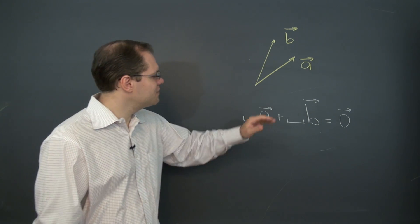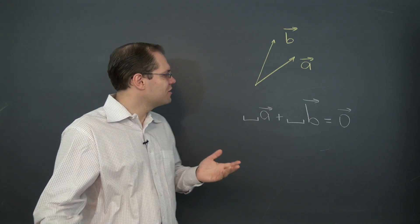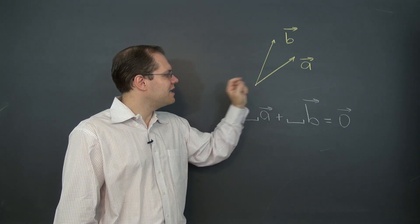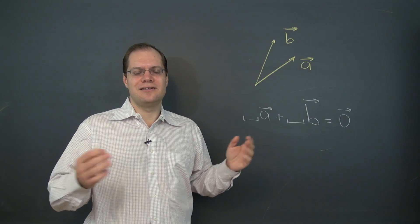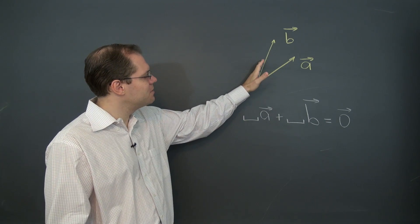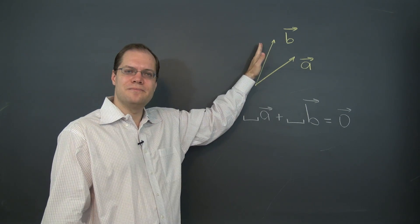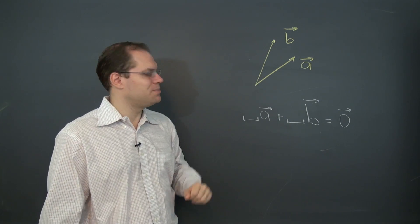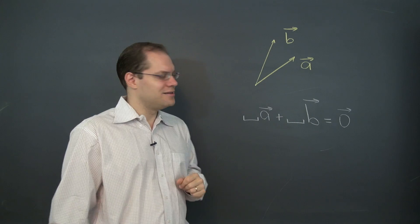Let's apply the two definitions to this pair of vectors. Are they linearly dependent? They aren't. According to the first definition, is A a linear combination of B? When we're down to one vector, linear combination simply means a multiple. So is A a multiple of B? It's not, because all multiples of B lie along this line. So A is not a multiple of B, and B is similarly not a multiple of A. So this set of vectors is clearly linearly independent.